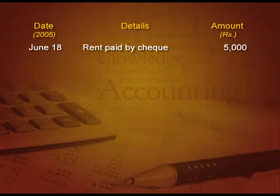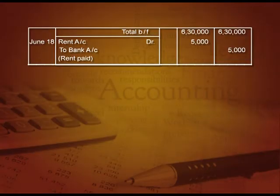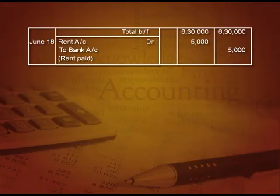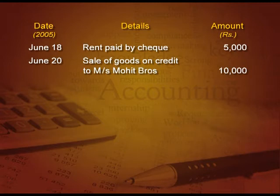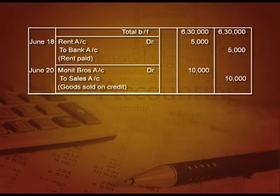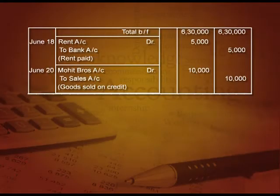Next: paid rent by cheque 5,000. The entry will be rent account debit to bank account. In the rent account we will write 'To Bank', and in the bank account we will write 'By Rent'. Next: sale of goods on credit to Mohith Brothers 10,000. The entry will be Mohith Brothers account debit to sales 10,000. In sales account I will write 'By Mohith Brothers 10,000'.